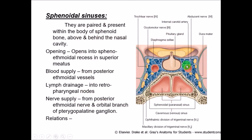The sphenoidal air sinus is located within the body of the sphenoid bone, and it opens into the sphenoethmoidal recess into the superior meatus. Blood supply is by the posterior ethmoidal vessels, lymphatic drainage into the retropharyngeal group of lymph nodes, and nerve supply from the posterior ethmoidal nerves and the orbital branch of the pterygopalatine ganglion. Important relations include the cavernous sinus on either side, the internal carotid artery, the third, fourth, and sixth cranial nerves, the pituitary gland above, and the optic chiasma.